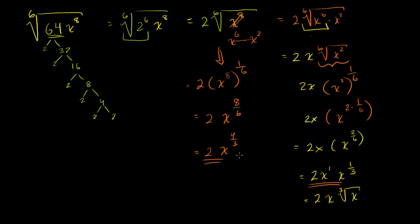Hopefully you found this tutorial on higher power radicals interesting. It's useful to see things in prime factor form and realize that if you're taking the sixth root, you need to find a prime factor that shows up at least six times — that's how you identify 2 to the sixth. Hopefully you found this mildly useful.